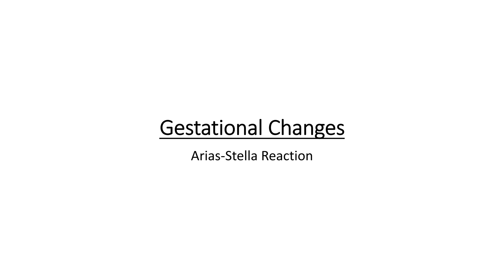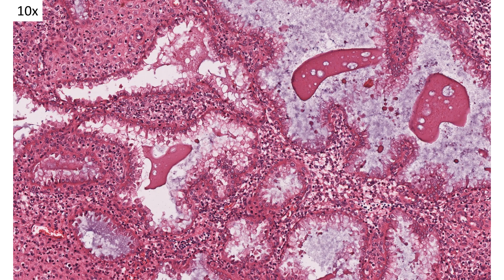The final change I want to talk about today is changes you can see during pregnancy. The main one is the Arias-Stella reaction, which can occur in cells throughout the GYN tract, but we'll discuss it specifically in the endometrium today. The Arias-Stella phenomenon is pictured here. The cells can look quite atypical if you don't have a history of pregnancy and aren't aware of this phenomenon. Basically, you can have a ton of vacuolar change in the apical portion of the epithelia — you can see these big vacuoles occurring here.